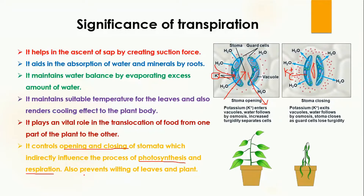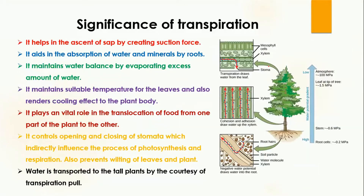Transpiration also prevents wilting of leaves and plants. If stomata are open, too much water evaporates. When too much water is lost through transpiration, the plant experiences water loss which can cause wilting. Transpiration helps prevent wilting by closing the stomata.